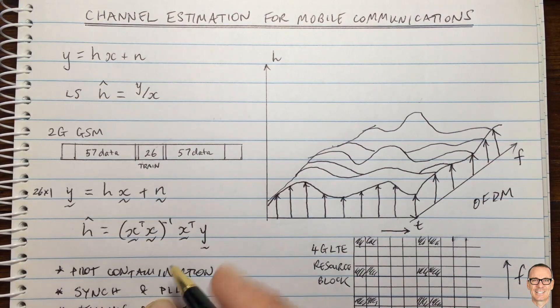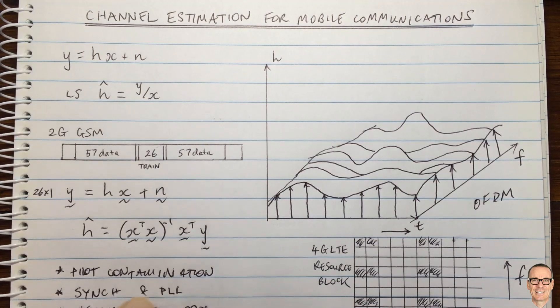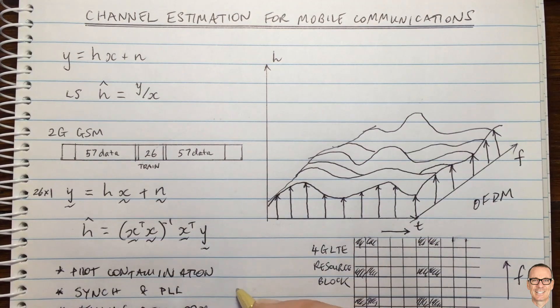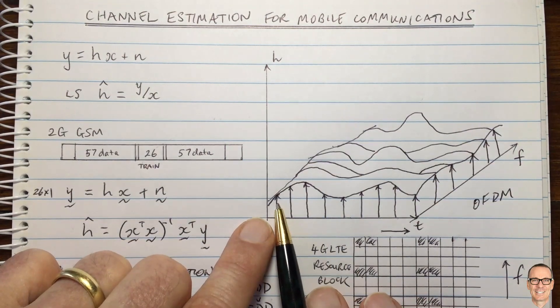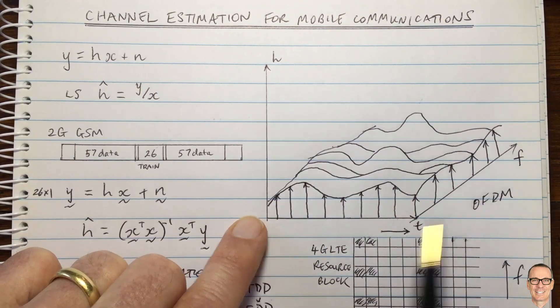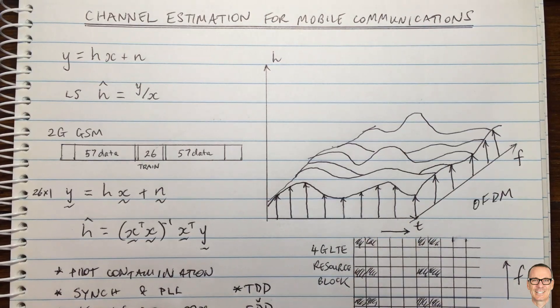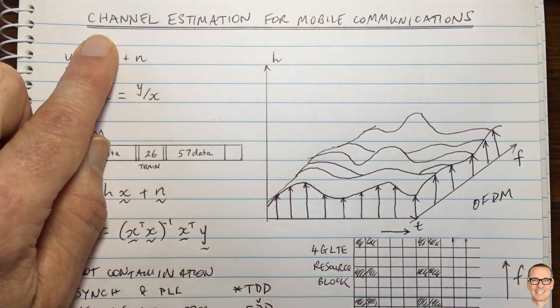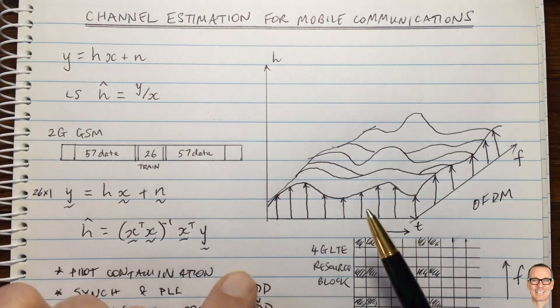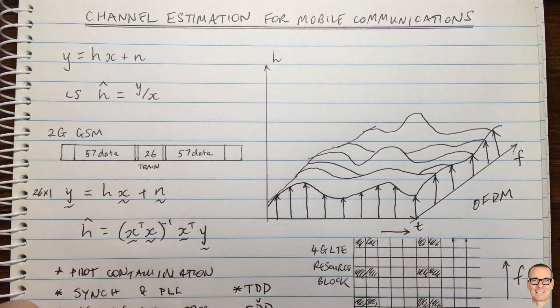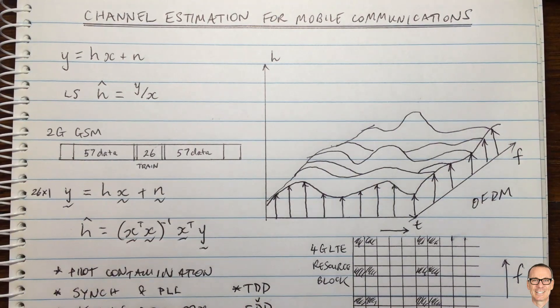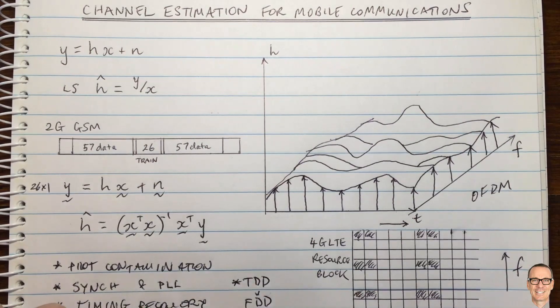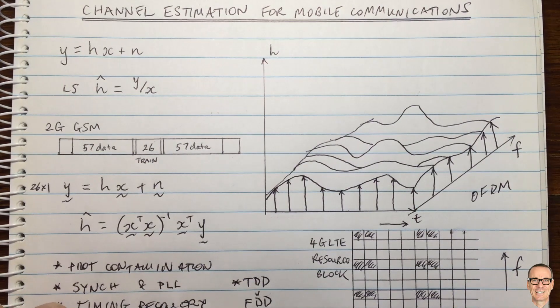Maybe the last thing to point out is that we have to also think about whether we're doing time division duplexing versus frequency division duplexing. In time division duplexing, because you're sending in one direction in the downlink for one period of time and then the uplink for the other period of time, you're using the same frequency band. So actually, you only need to do channel estimation in one direction. Then you can know that channel and use that channel value in the other direction. Whereas frequency division duplexing, the uplink and the downlink are using different parts of the frequency band. Therefore, in frequency division duplexing, you need to do channel training in both directions on the uplink and the downlink.